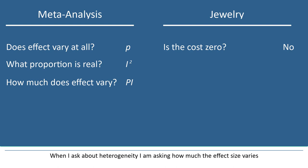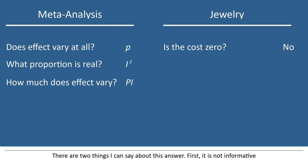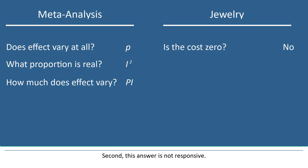When I ask about heterogeneity, I'm asking how much the effect size varies. A significant p-value tells me that it varies more than zero. And there are two things I can say about this answer. First, it's not informative: if I'm pulling studies from the literature, I can generally assume that the true effect size varies, so I don't need a p-value to confirm that. And second, the answer is not responsive. I asked how much does the effect size vary, and the answer, more than zero, is not helpful.